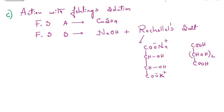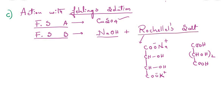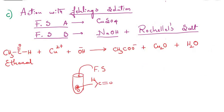The next part is the action of aldehydes with Fehling's solution. Fehling's solution is a mixture of two solutions: Fehling solution A (copper sulfate) and Fehling solution B (a mixture of sodium hydroxide and Rochelle's salt). Rochelle's salt is the sodium or potassium salt of tartrate. Tartaric acid is a dicarboxylic acid with four carbons; when its hydrogens are replaced by sodium and potassium it becomes sodium potassium tartrate, known as Rochelle's salt.